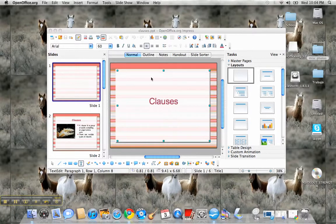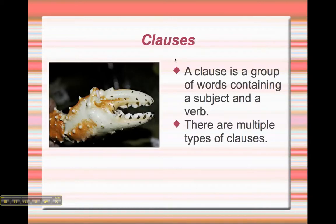So I have a slide that focuses on clauses, and we're just going to do a brief overview of clauses, just in case you're struggling with that at all. A clause — not a claw — is a group of words containing a subject and a verb. And there are multiple types of clauses, and we're going to go over a few of them.